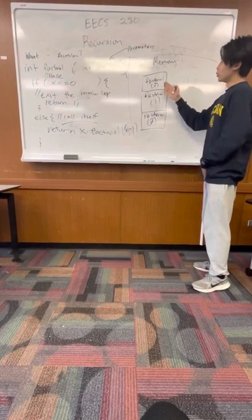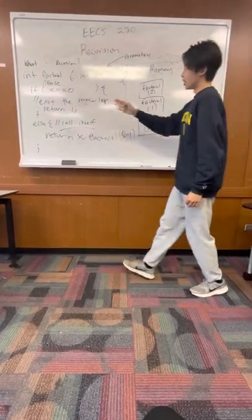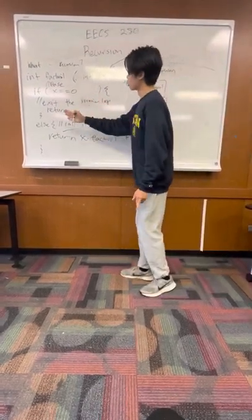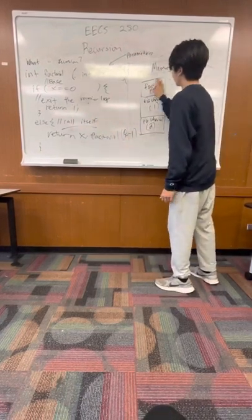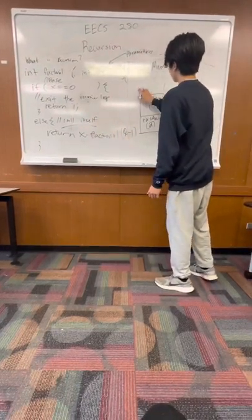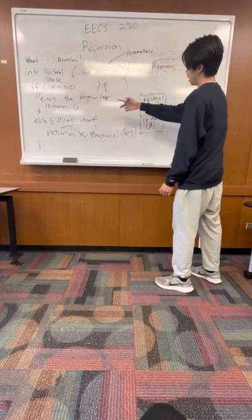Alright, so now, once you reach 0, this base case would be true, and then it returns 1. So here, this returns 1, and then once the function returns, it gets rid of it, and now it returns 1.